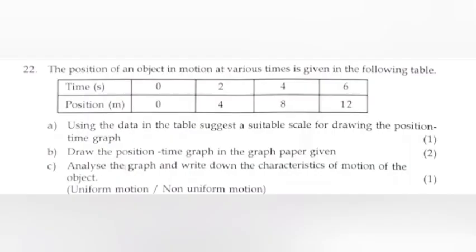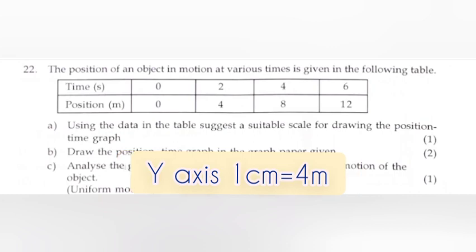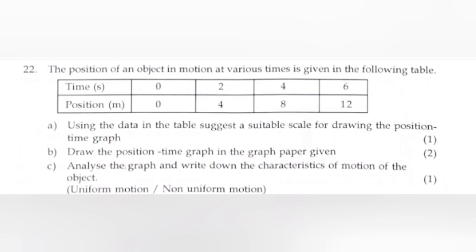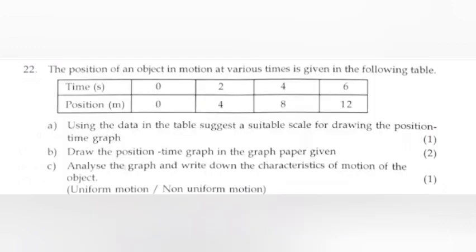Question 22: The position of an object in motion at various times is given in the following table. (a) Using the data in the table, suggest a suitable scale for drawing the position-time graph. Answer: x-axis - 1 cm = 2 seconds, y-axis - 1 cm = 4 meters. (b) Draw the position-time graph on the graph paper given. X-axis time: 0, 2, 4, 6. Y-axis position: 0, 4, 8, 12. (c) Analyze the graph and write down the characteristics of motion of the object: uniform motion or non-uniform motion.